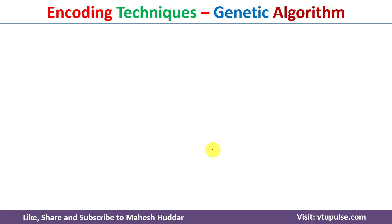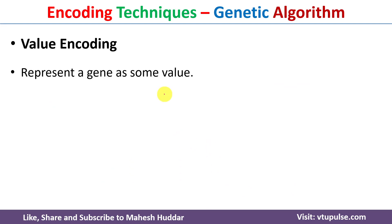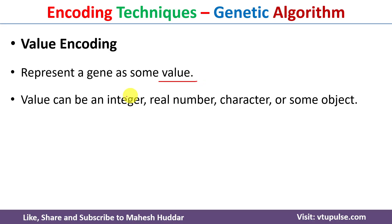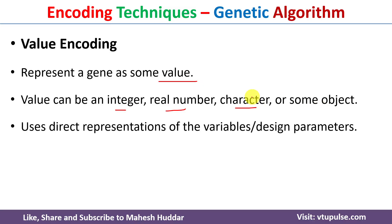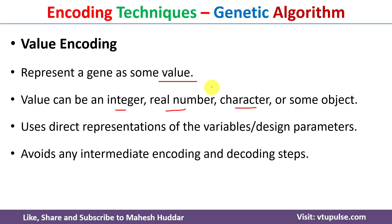The second encoding technique is value encoding. In value encoding, the gene has some value rather than 0 and 1 — it holds the value directly. The value can be an integer, real number, character, or some object. We put the value directly into the gene while representing the chromosome.